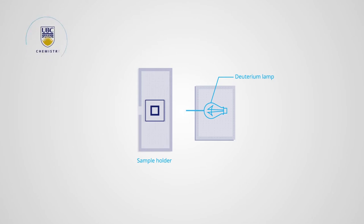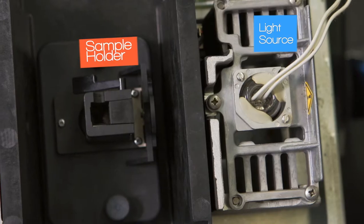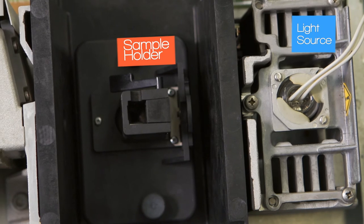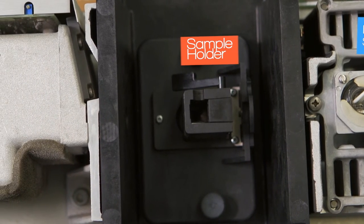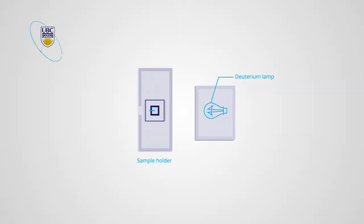The light beam is focused from the source into the sample holder. The sample holder for this instrument can only hold one cuvette, thus we need to measure the reference solution before measuring the sample solution. The light travels through the cuvette and into a small opening on the other side.